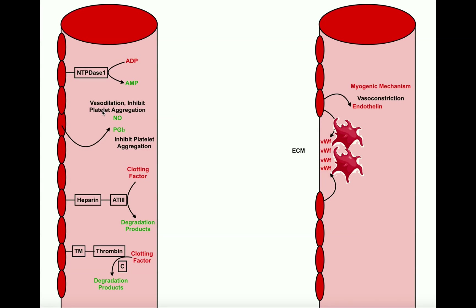First we need to understand the normal workings of a healthy blood vessel, because we really need to understand what healthy blood vessels are doing before we can go to the situation where there's damage or injury. These blood vessels are lined by cells called endothelial cells. These endothelial cells are metabolically active — they're not just static or structural — and they have many activities that really do two things: they keep coagulation from happening unnecessarily, and they keep platelets from sticking together.